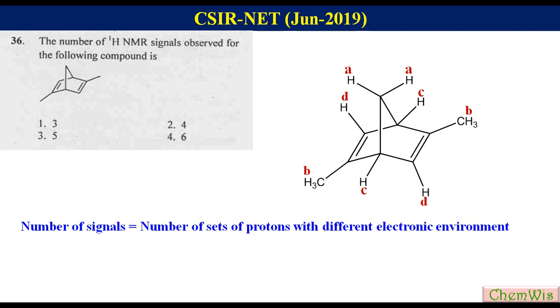Since there are 4 sets of protons with different electronic environment, the number of signals will be 4 and option number 2 will be the right option.